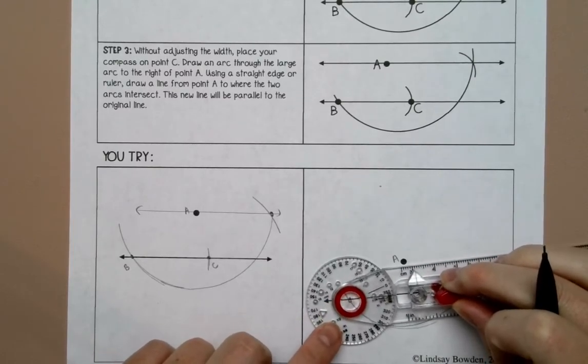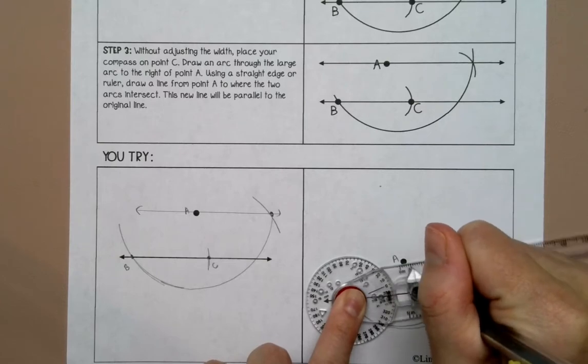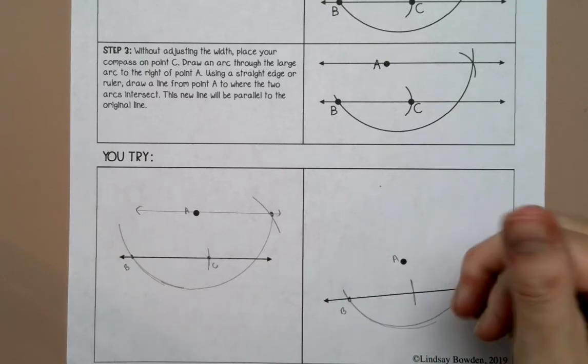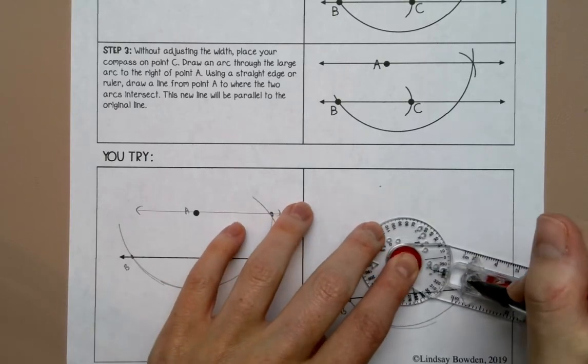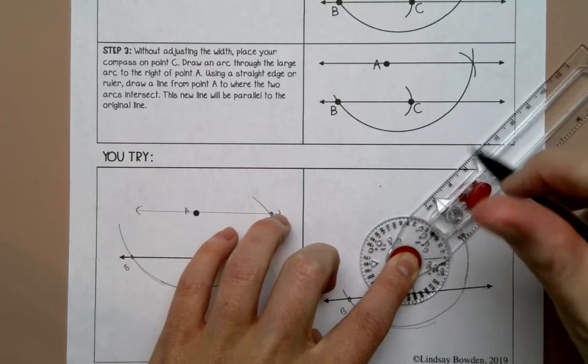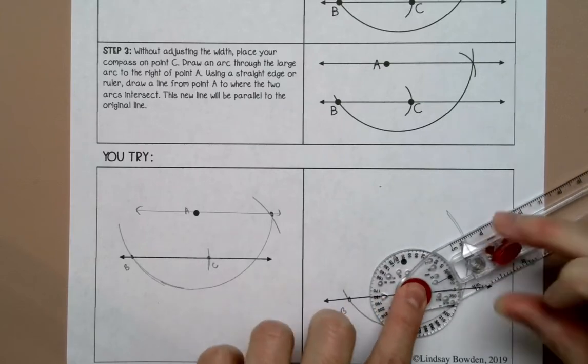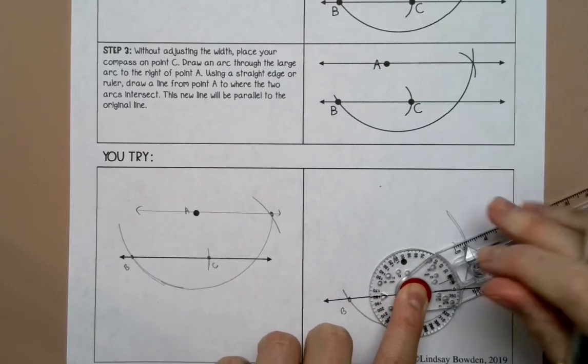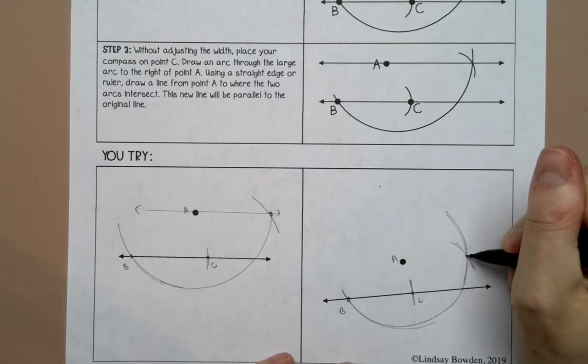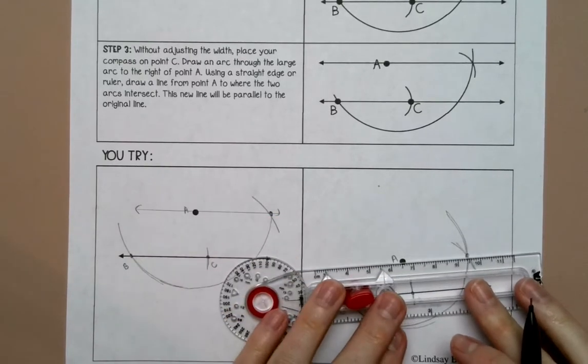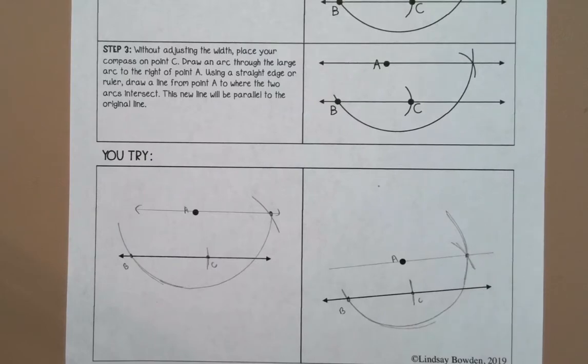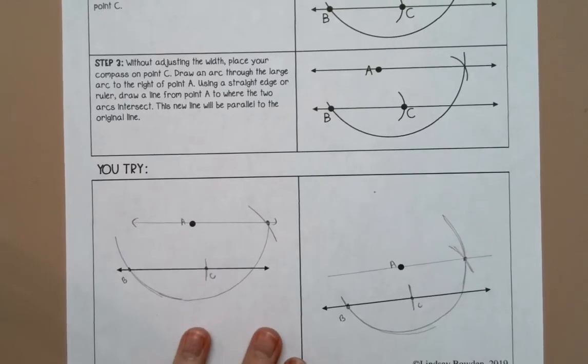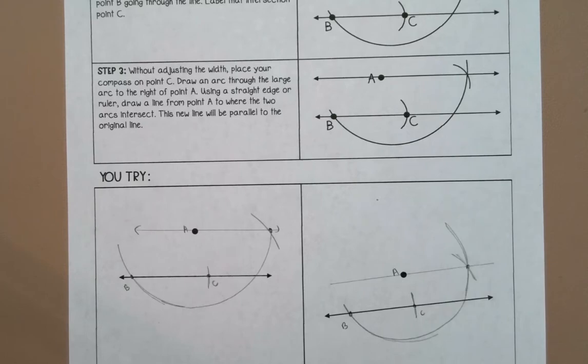Not moving my compass width. Label that C. Now actually I need to extend this arc a little bit, so I'm just going to go back to A and extend this up because I need to draw an arc here. Where these meet, I'm going to connect these and that's going to be my parallel line. That is how you draw a parallel line using the rhombus method.